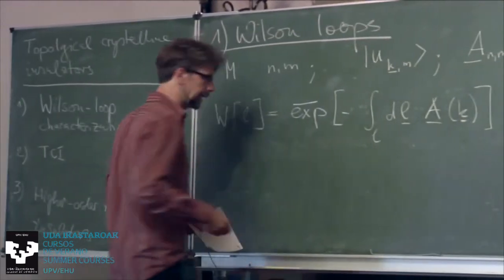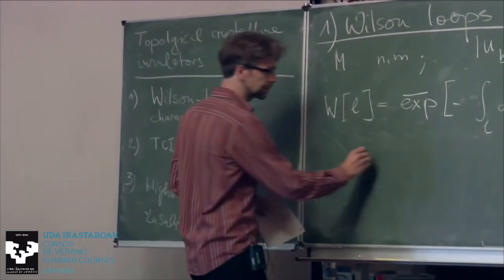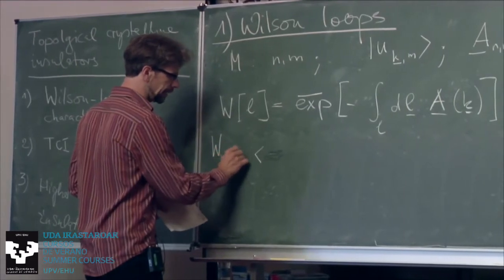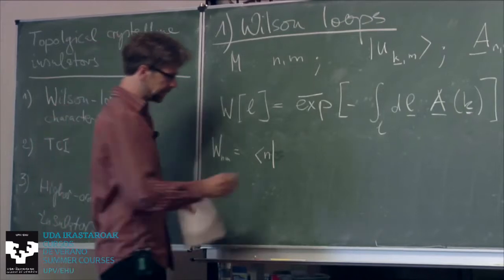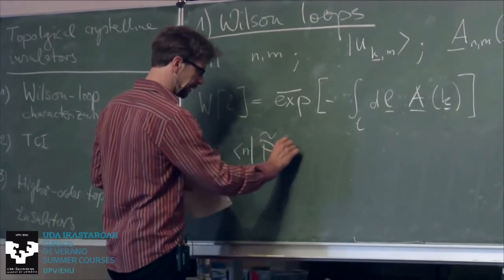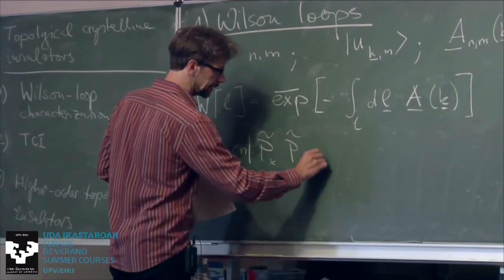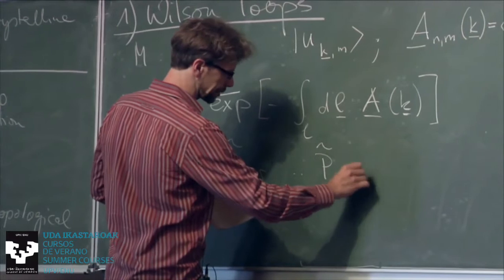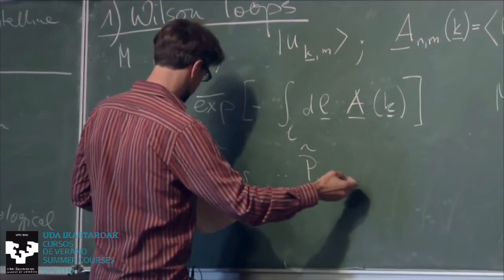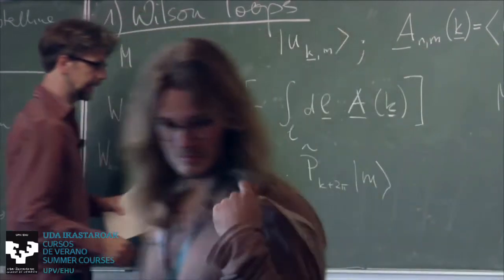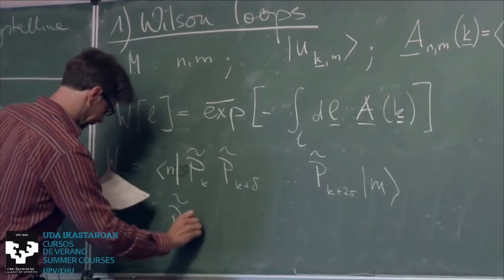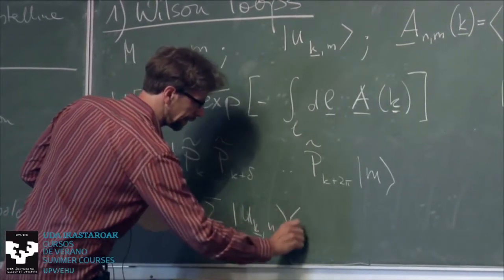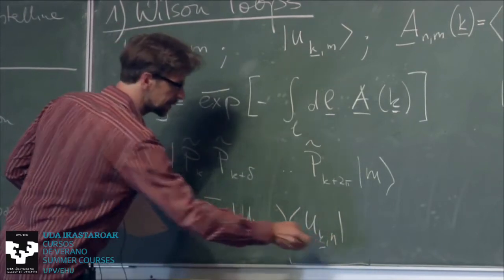Numerically, you can compute that as well. To get the NM matrix element, you take the N state, then a projector P̃(K), then P̃(K + δ), and so on up to P̃(K + 2π), closing a path, and then take the M-th band. This P̃ is just the sum over all occupied bands: P̃(K) = Σ_N |u(K,N)⟩⟨u(K,N)|. So the projector onto these bands.